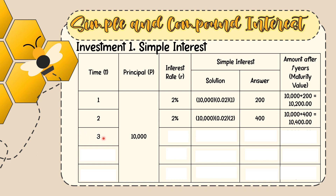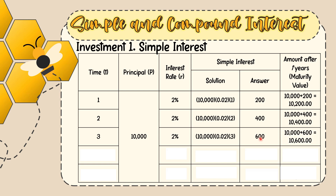For year 3, same interest rate of 2%. The principal is multiplied by the interest rate and time. Solution: 10,000 × 0.02 × 3 = 600. The interest is 600, so the maturity value is 10,000 + 600 = 10,600 pesos.